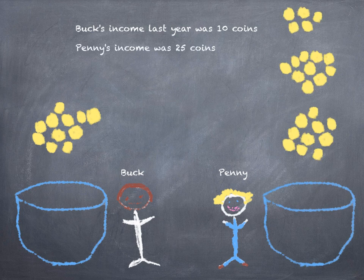Under the United States Graduated Tax Code, everyone pays the same tax rate on the same part of their income. The percentage goes up on income only above certain thresholds.